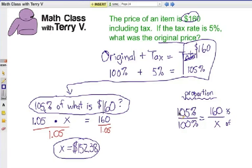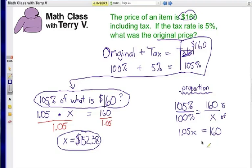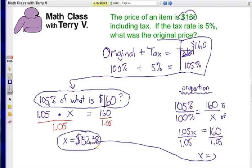We're going to cross multiply. 105% times x diagonally, which is really 1.05x. Then 100% times 160 is still 160 — remember, 100% really means 1. So we divide both sides by 1.05, and we come up with the same answer: $152.38. Equation method or proportion method — both work.